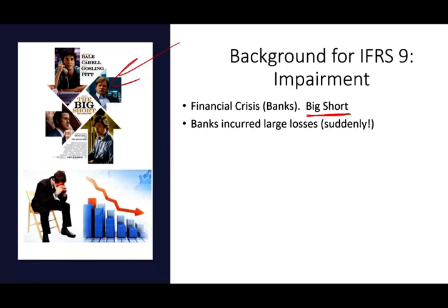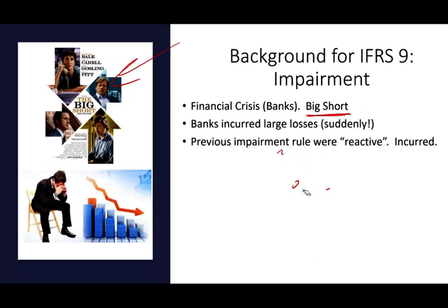What happened in 2007 and 2008 is that suddenly, a large portion of people who took loans starting in 2004, 2005, 2006, and 2007 started to default — started not to be able to pay their loans. The previous rules for impairment were reactive: we book the losses as they occur. We wait for the losses, and if they happen, we have losses. What we have now is the expected credit loss model.